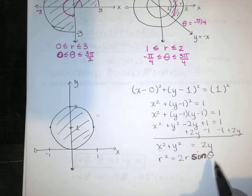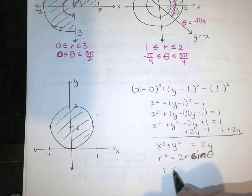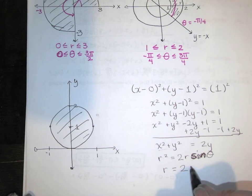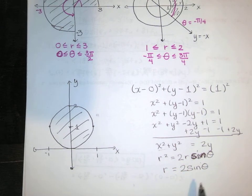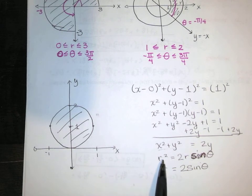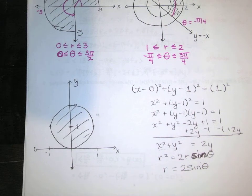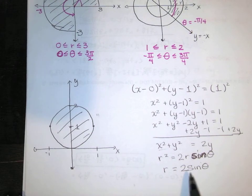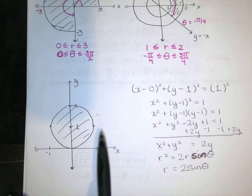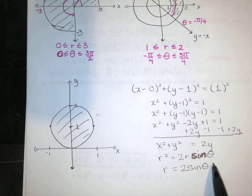Normally we don't like to cancel a variable from both sides, but here we can divide by r. That gives us r = 2 sin θ. When θ is 0, r is 0, so this does not prevent r from being 0 — it's a valid simplified version of the equation. This is how we describe that boundary curve: instead of x² + (y−1)² = 1, we write r = 2 sin θ.